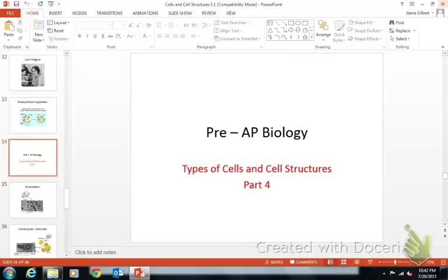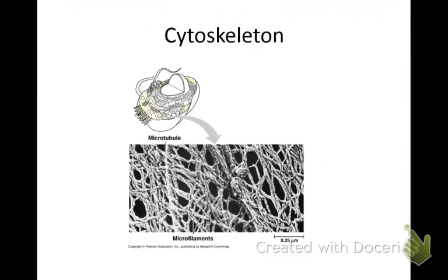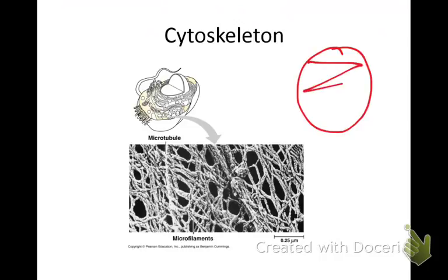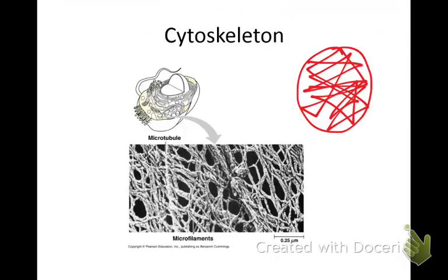The first thing we're going to talk about is the cytoskeleton. Just like your skeleton, it's going to support and protect the cell. We never really see this in a cell drawn, but it will be all through the cell, holding the structure, shape, and protection, much like your skeleton does for you. It also helps to keep the organelles organized and keeps them in place. It can also help with moving — the cytoskeleton could be on the outside for movement.